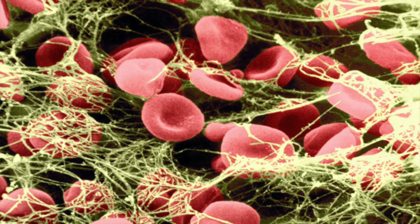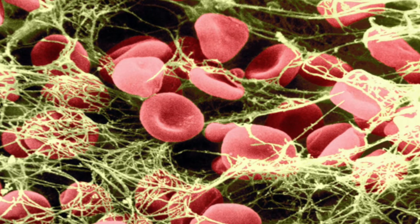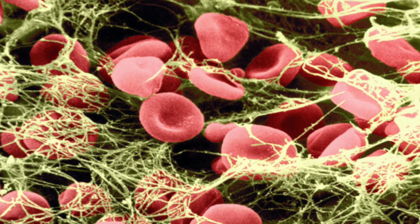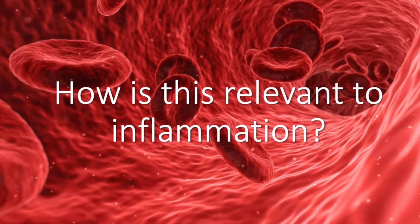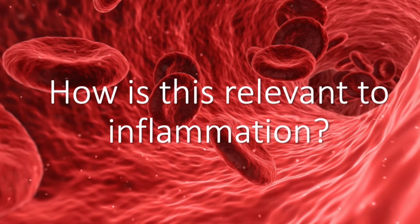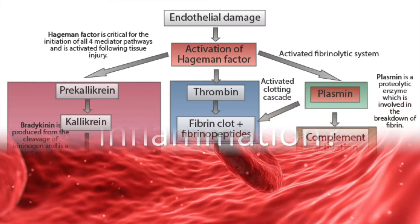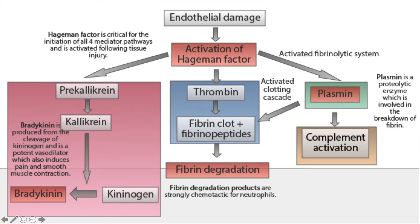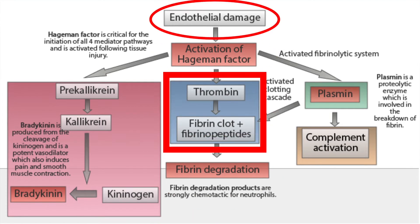Fibrin also helps the formation of fibrinopeptides, which act as important inflammatory mediators. How does fibrin relate to inflammation and inflammatory response? Well, fibrin is an important product from the clotting system, one of the plasma enzyme mediator systems that are activated after endothelial damage.